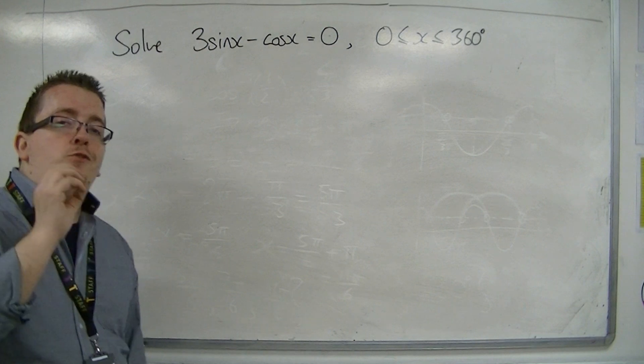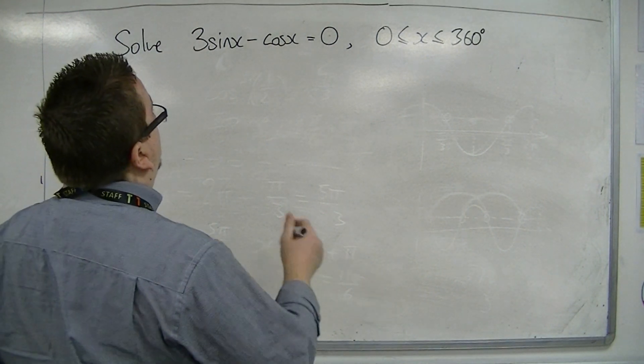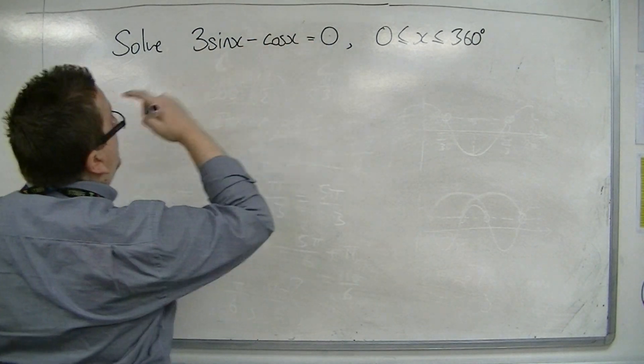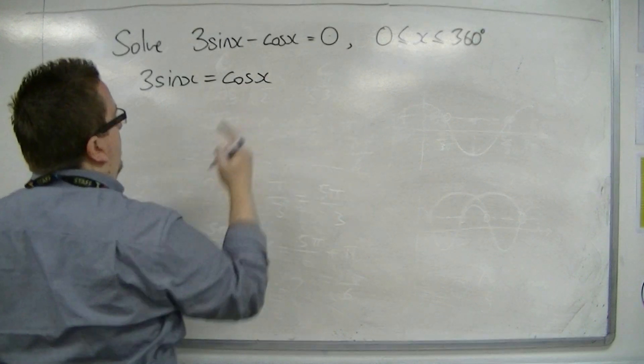This one first needs you to rearrange the equation. So we've got 3sin(x) minus cos(x) equals 0. So if I add cosine to both sides, then I have that.